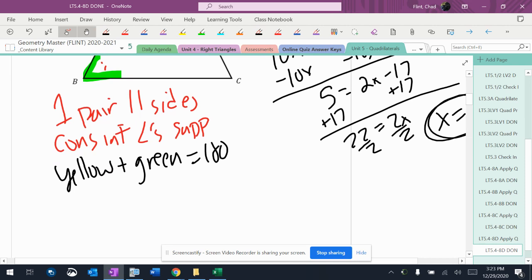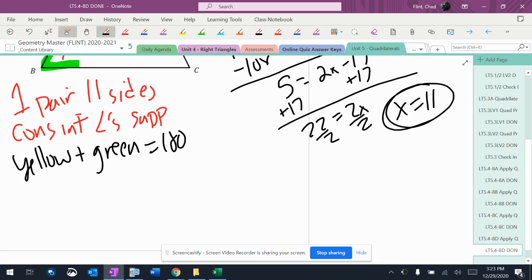I can figure the yellow one out. It's 10x plus 5, and x is 11. So 10 times 11 plus 5 is 115.